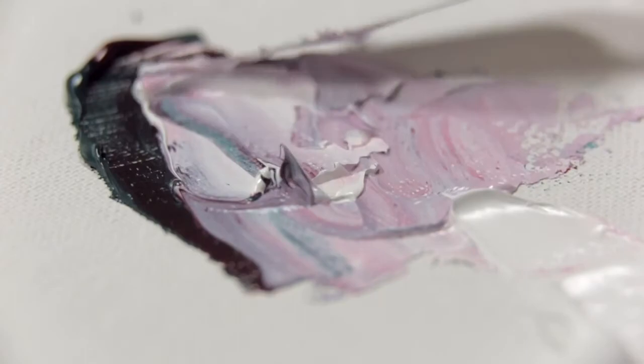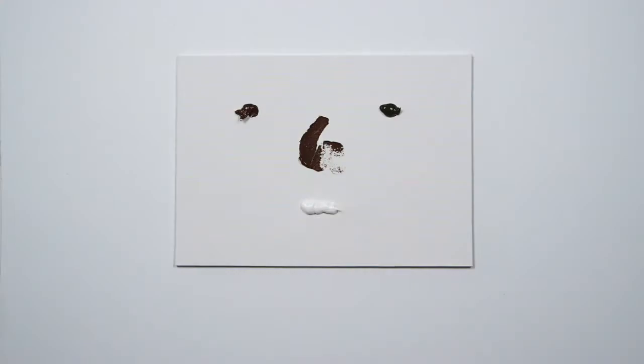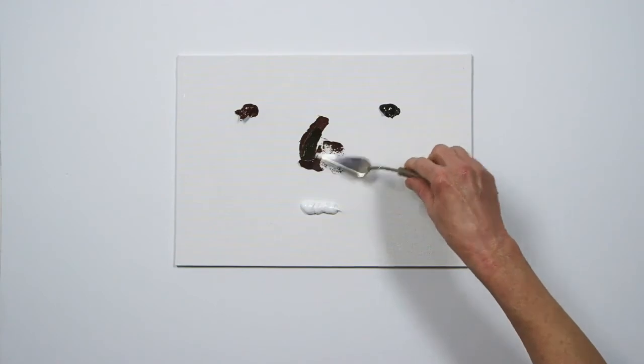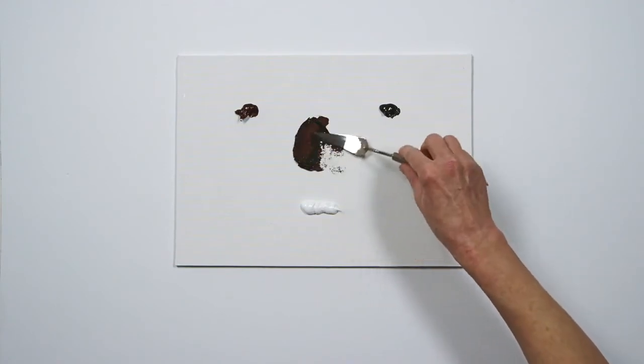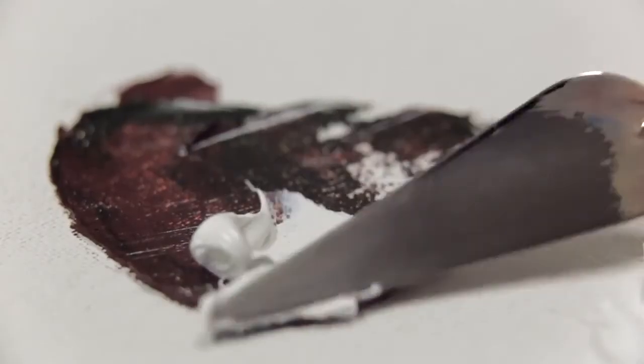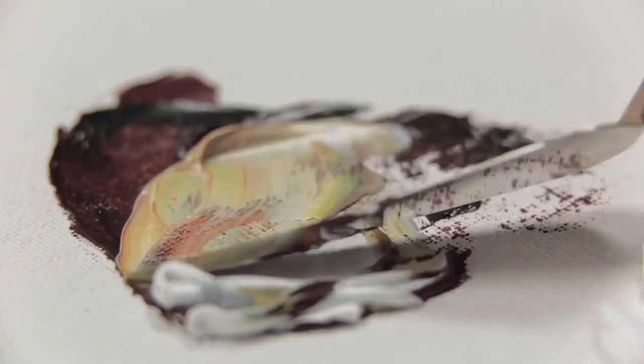If these greys seem too high chroma for the needs of a specific painting, it's possible to mix more earthy greys by using a low chroma pigment, such as burnt sienna, instead of high chroma scarlet or alizarin. Here, I'm mixing burnt sienna with sap green. I'll add some white, and you can see that it makes a lovely earthy grey that would work well in a traditional landscape.